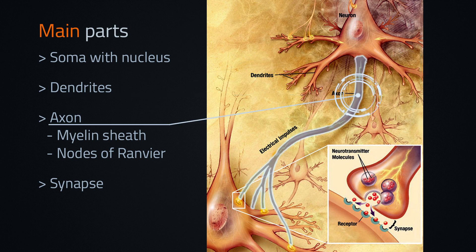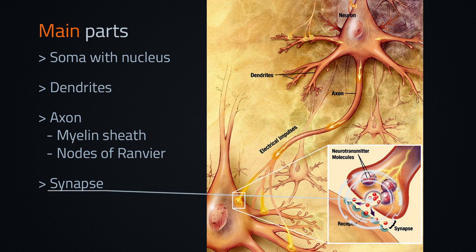Axon is like a long wire through which neurons send signals to other neurons. The axon is covered with myelin sheath separated by nodes of Ranvier. And synapse is the place where the axon of one neuron connects to the dendrite of another.